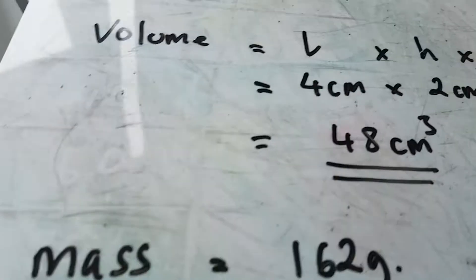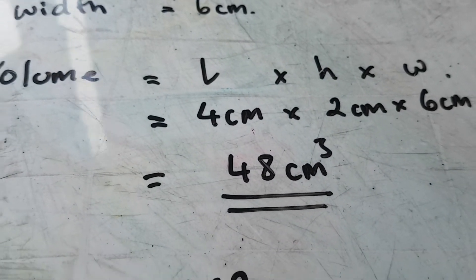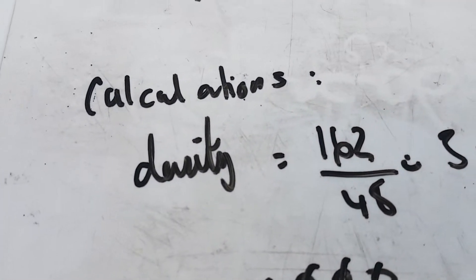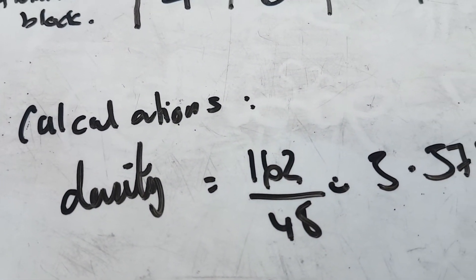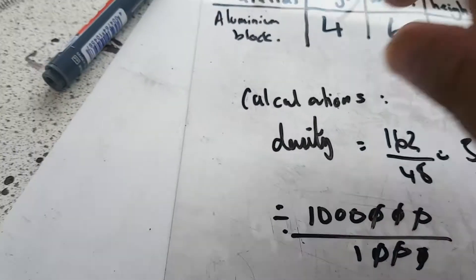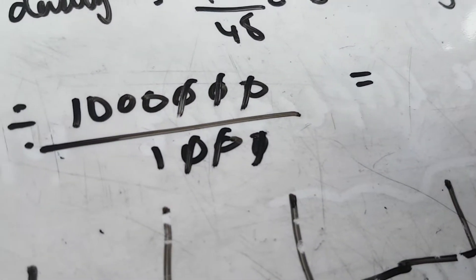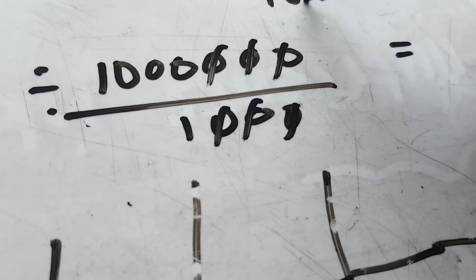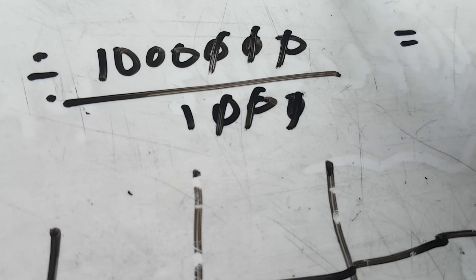So number one, show your volume calculation, which is there. And number two, show your density calculation. So it's 162 grams. So I've been a bit naughty here and not including my units. That's not good at all.